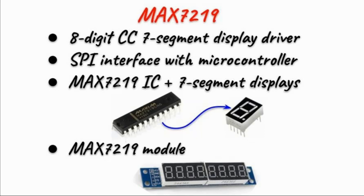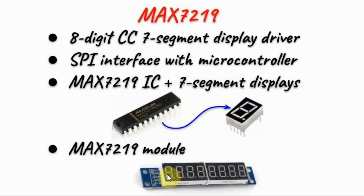The MAX7219 integrated circuit is an 8-digit common cathode 7-segment display driver, which is fully programmable by a microcontroller. It is interfaced with a microcontroller using an SPI connection. We can either use the IC coupled with 7-segment displays, or we could use a module such as the one seen here. In this video, we'll be using this module to interface with the microcontroller.